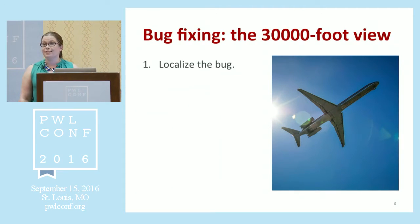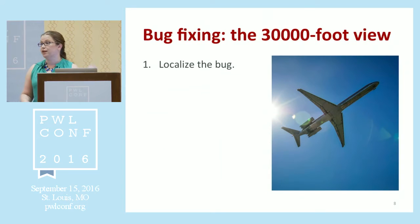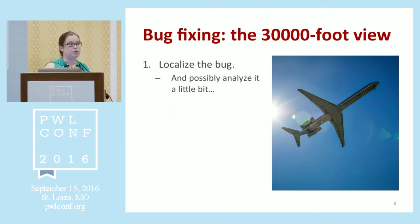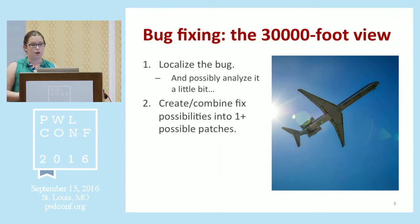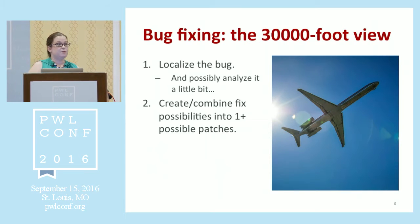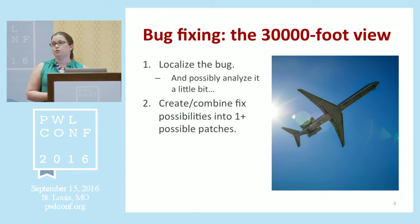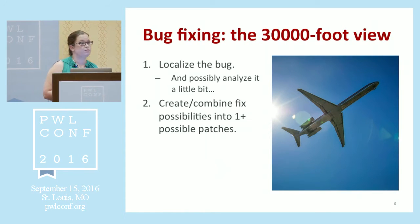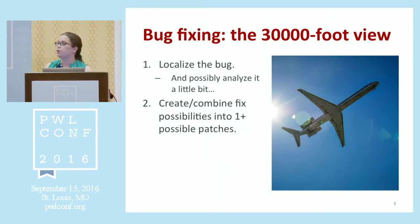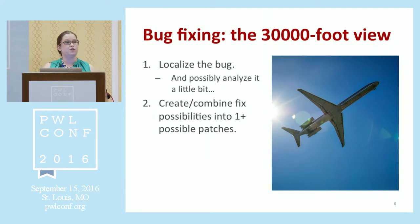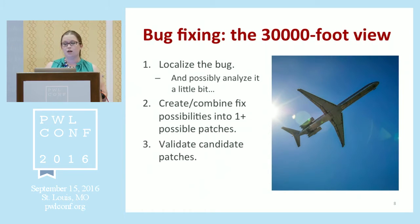Step one is you need to localize the bug to some smaller unit of the program — the function it's in, the line of code. You might do a little analysis, either static or dynamic, to understand the bug and come up with a way to fix it. Then any technique will have some set of strategies to create fixed possibilities — templates or edit templates — that they will recombine or create or instantiate to make one or more possible patches, which they will then try and validate to find one that does the trick.